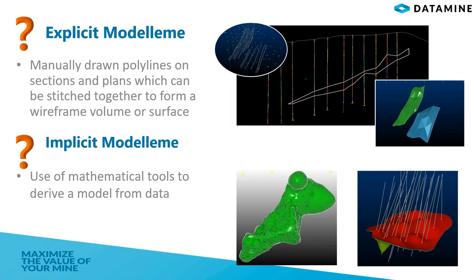I have prepared my drill hole data for implicit modeling and can start the modeling process. However, before moving to the modeling stage I should give some brief information on types of modeling — specifically what explicit and implicit modeling are. Explicit modeling is the method to create closed volumes or surfaces by combining or correlating closed areas formed on vertical or plan sections. You can create closed strings on every cross section, then with the wireframe linking option you can link each section and obtain closed solid wireframes.